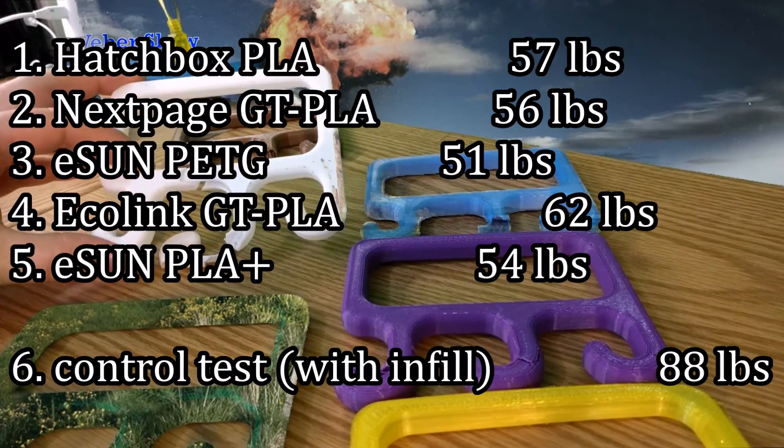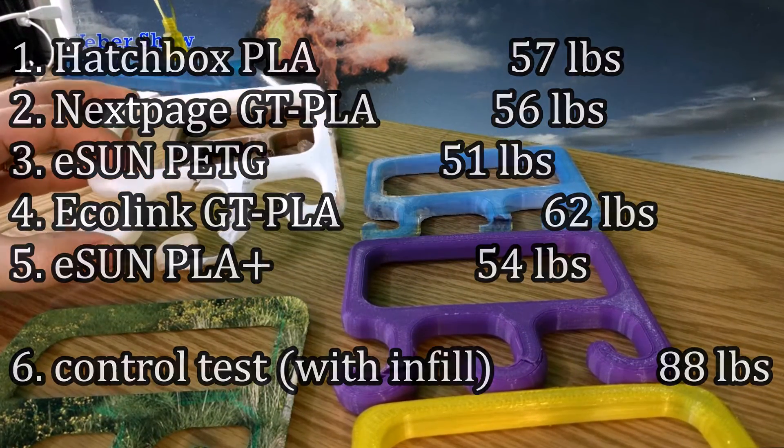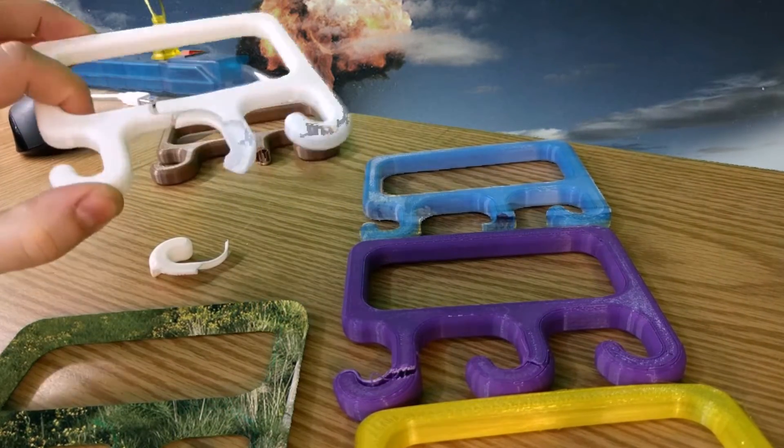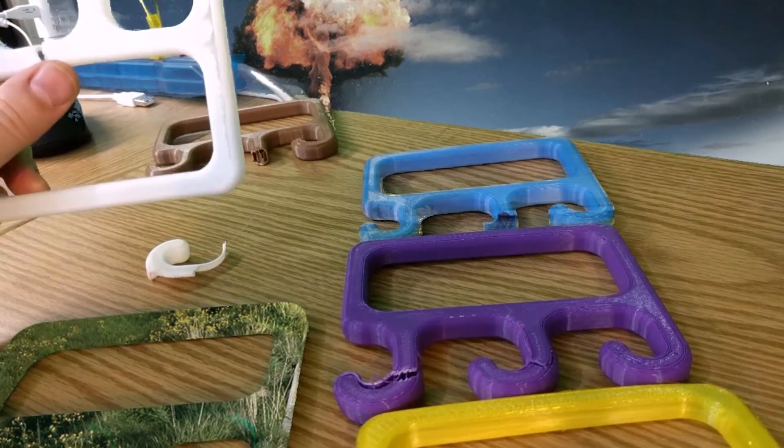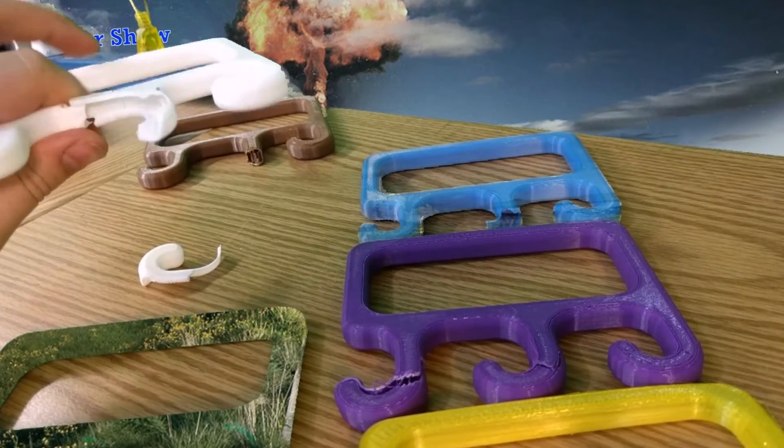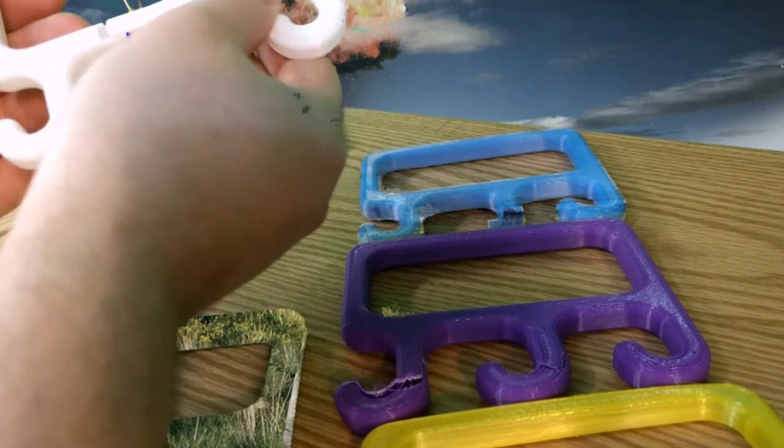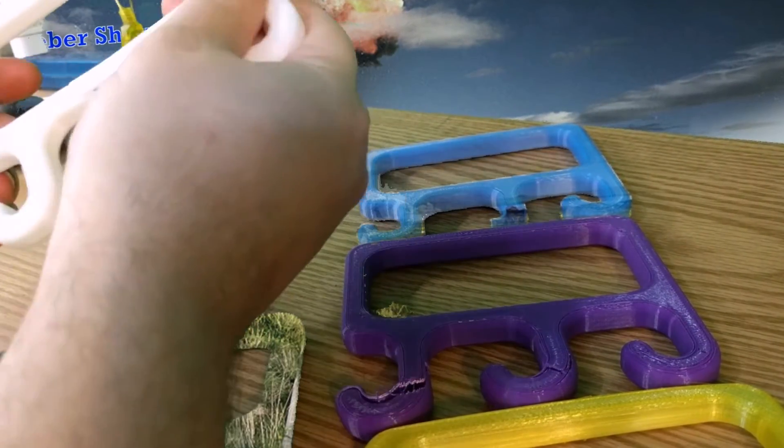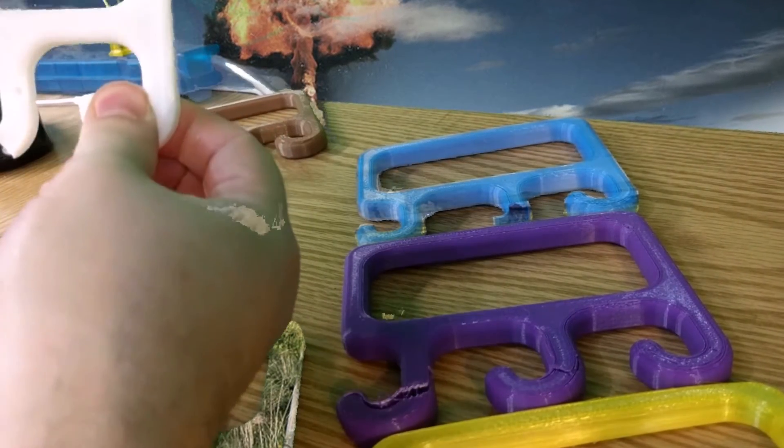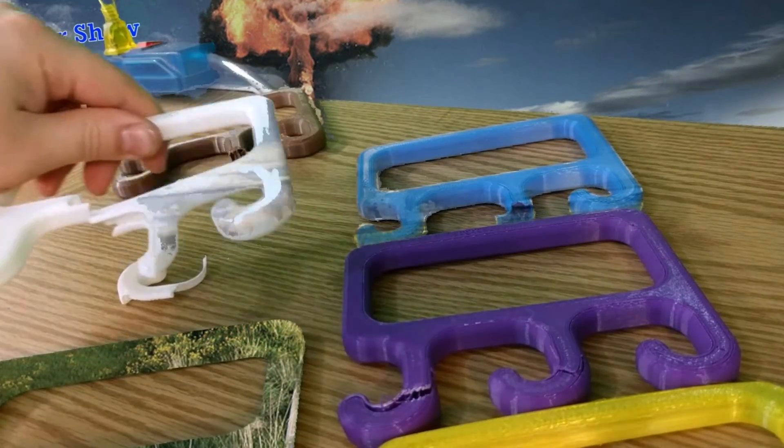Here in second place, this is the Ecolink GT PLA. And it's interesting how it was really strong, but when it finally failed, it just failed really catastrophically. The entire thing broke in half, and so it probably won't hold a lot of weight on any of these hooks anymore.